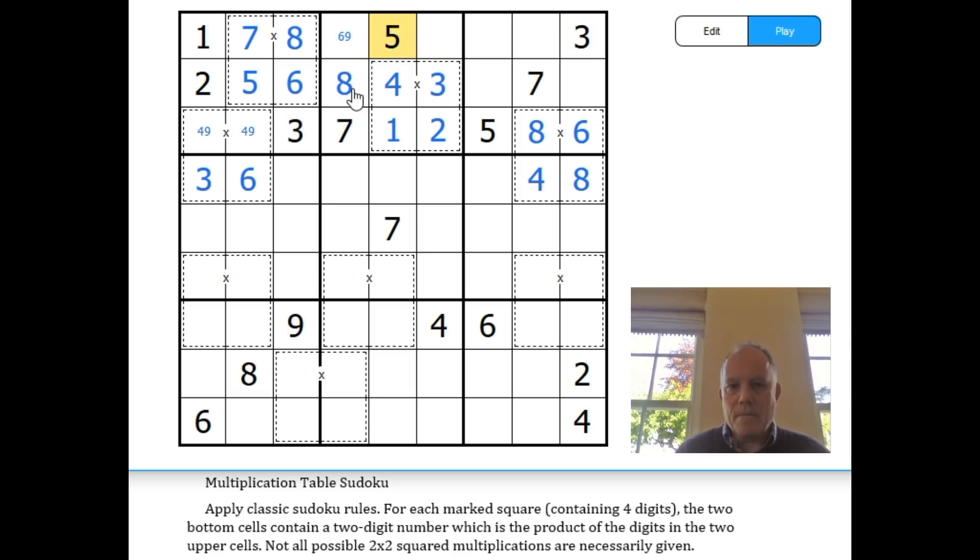You do need to know your times tables for this, but it is called Multiplication Sudoku, so that's not a surprise. These must be 2 and 4 for the remainder of that row, and 1 and 9 for the remainder of this row, but we'll sort those out in due course.